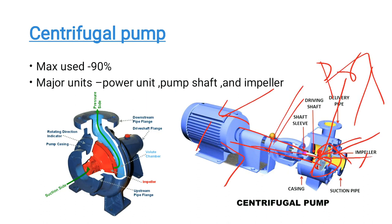The casing surrounds the impeller and provides direction to the flow toward the delivery pipe. This is the working principle of the centrifugal pump.